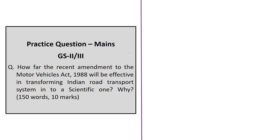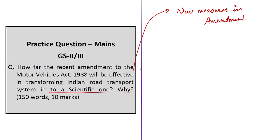A mains question asks: how far will the recent amendment to the Motor Vehicles Act 1988 be effective in transforming Indian road transport into a scientific system? To answer this, mention the new measures brought in the 2019 amendment such as the National Road Safety Board, electronic monitoring including speed cameras, and how these provisions help India achieve the features of a scientific road system — which considers the needs of vulnerable road users like differently-abled persons, pedestrians, and children, and includes good engineering to improve road infrastructure quality.